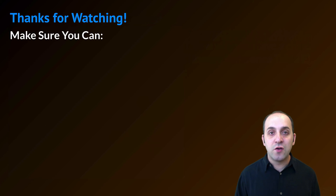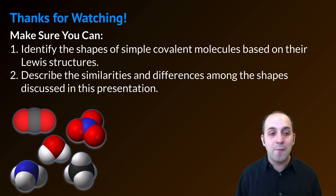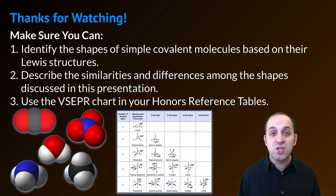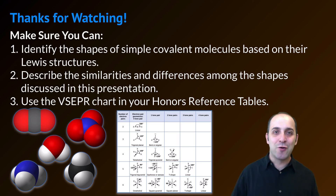Thanks so much for watching our discussion of molecular shape. Make sure you can do the following things: identify the shapes of simple covalent molecules based on their Lewis structures; describe similarities and differences among the shapes discussed in this presentation; and use the VSEPR chart in your Honors Reference Tables to determine the shapes of molecules when expected to. If you can do each of those things, you're doing great. If not, that's okay — take a moment and write down any questions you have. You can always leave them in the comments below the video or get in touch with me through the info field. Thanks again for watching, and have a great day.